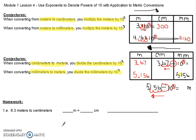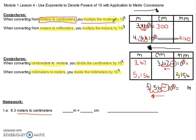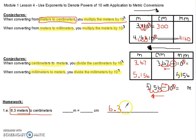How can we use this knowledge to help with homework? Looking at problem 1, part E — we have 6.3 meters to centimeters. I look and see which conjecture matches meters to centimeters — it's the first one, which says multiply by 10 to the second power. So I write my equation: 6.3 meters multiplied by 10 to the second power, and that gives me my centimeters.